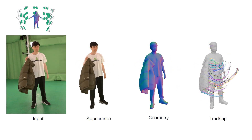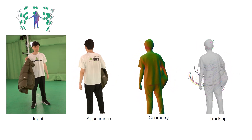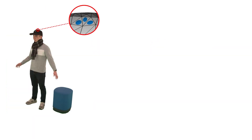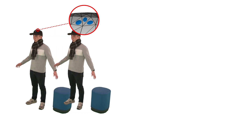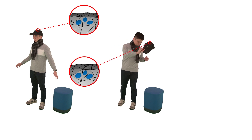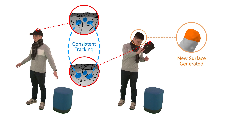G-star works for general dynamic scenes while handling topology changes. We represent dynamic surfaces by attaching Gaussians to mesh faces — we call this representation Gaussian surfaces. For topology-consistent surfaces, like the cap here, G-star consistently tracks mesh faces and Gaussians. When new geometry appears, like the hair region, G-star generates new surfaces accordingly.